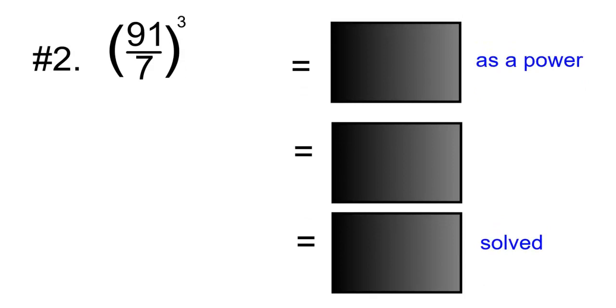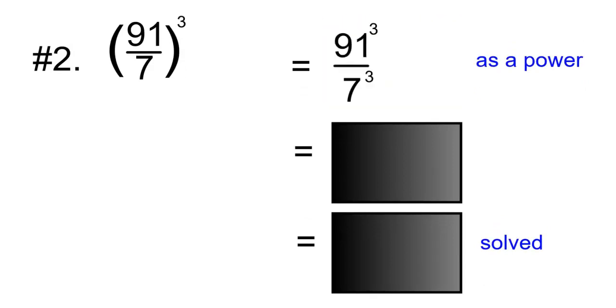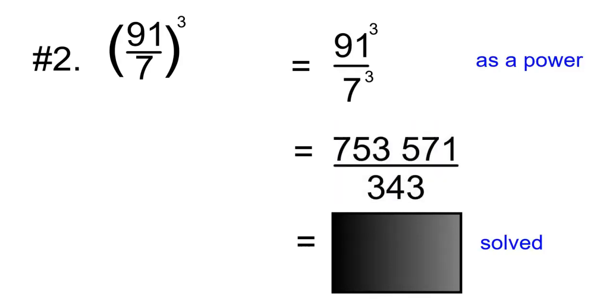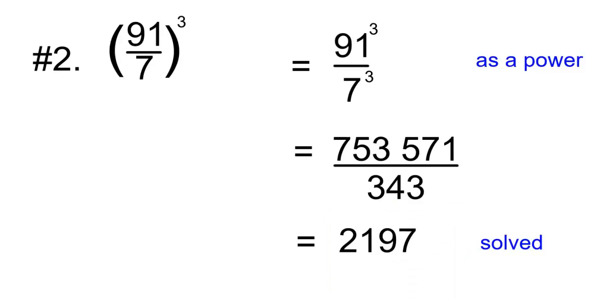Question number 2. 91 divided by 7 to the power of 3. Written as a power, this would be 91 to the 3 divided by 7 to the 3. Solve each separately. You get 753,571 over 343. After you divide them, you'll get a final answer of 2,197.